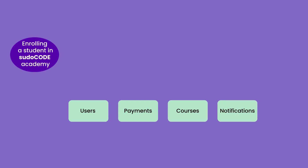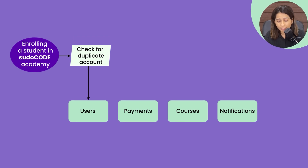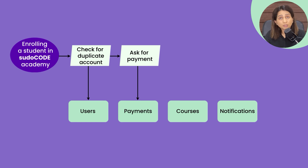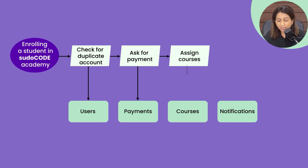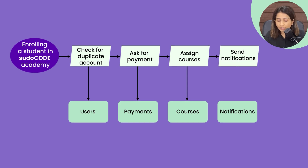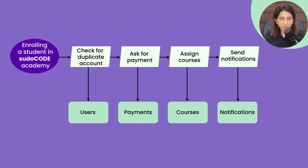Saga is much more detailed than this — there are different papers written on it — but let's focus on the practical aspect of how it is used in microservices. Let's take an example: a pseudocode academy trying to create an account for a user and assign some courses to them. We have different services: users, payments, courses, and notifications. When a new user account is created, the steps are: check for a duplicate account, request payment, once payment is done create the profile and assign courses, and finally send a notification that the account is created and courses have been assigned.